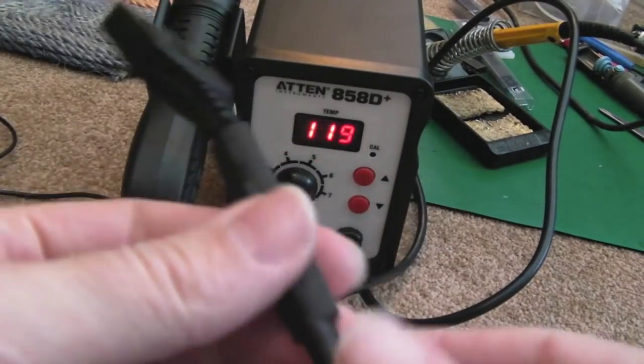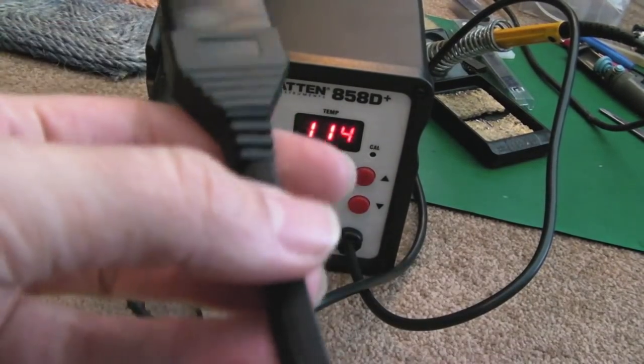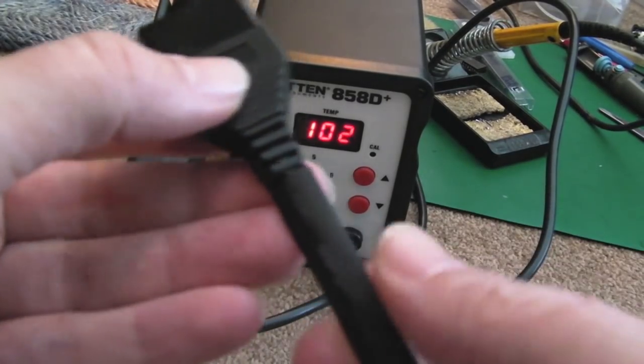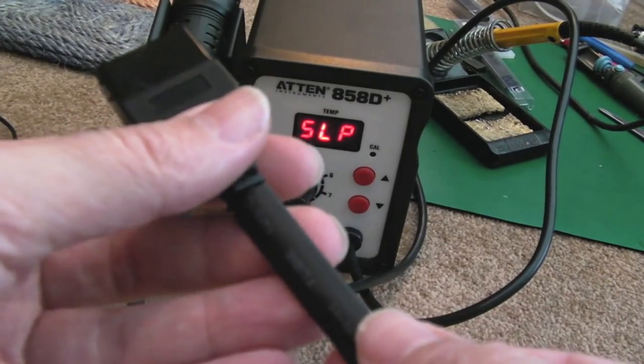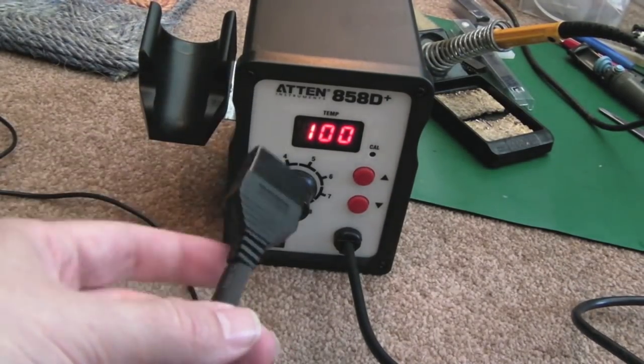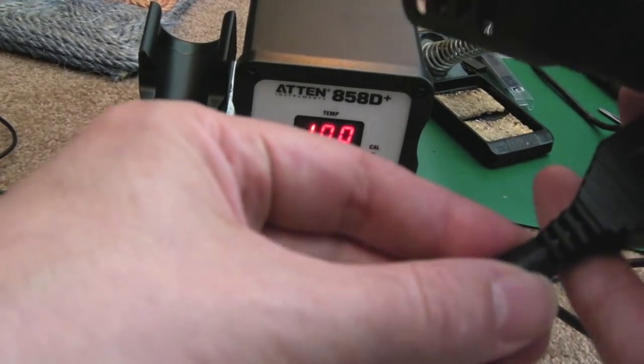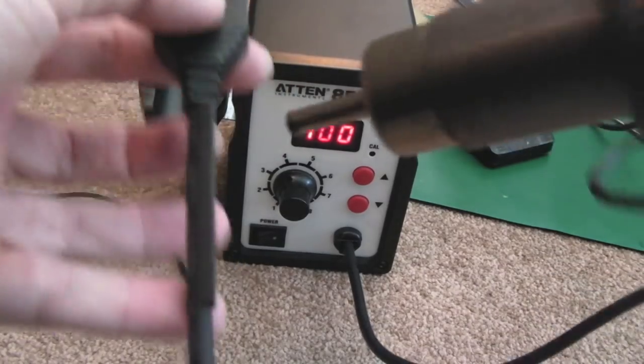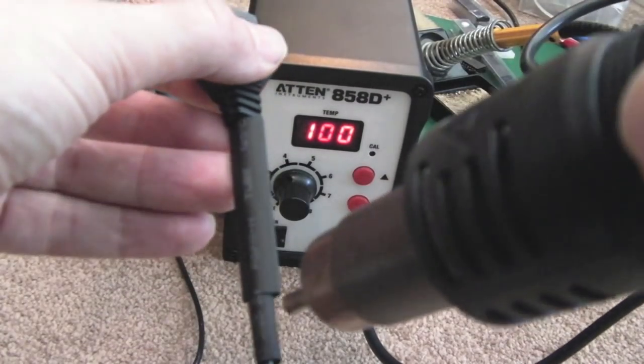You can see I've slid two different thicknesses of heat shrink over here. I'll just get that in place. I've set it to 100 degrees, might need to go hotter than that I'm not sure. Let's see, find out. Yeah I can feel that, 100 degrees might not be hot enough.